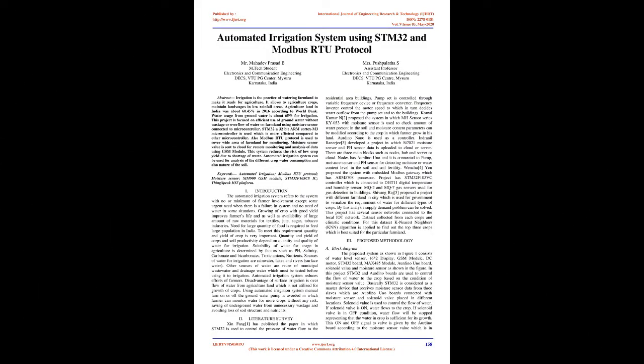Automated Irrigation System Using STM32 and Modbus RTU Protocol. Abstract: Irrigation is the practice of watering farmland to make it ready for agriculture. It allows agriculture crops to maintain landscapes in less rainfall areas. Agriculture land in India was about 60.45% in 2016 according to the World Bank. Water usage from groundwater is about 65% for irrigation. This project is focused on efficient use of groundwater without wastage or overflow of water on farmland, using a moisture sensor connected to a microcontroller.